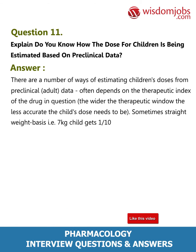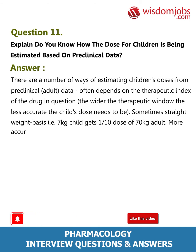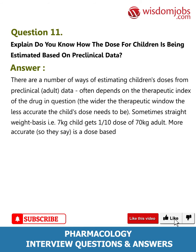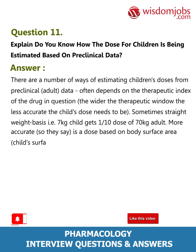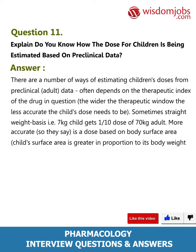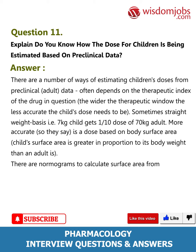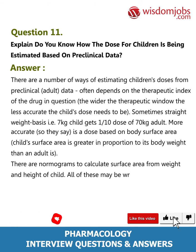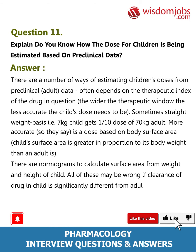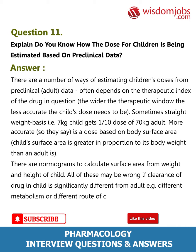Sometimes a straight weight basis is used — for example, a 7 kg child gets one-tenth the dose of a 70 kg adult. More accurate is a dose based on body surface area, since a child's surface area is greater in proportion to its body weight than an adult's. Nomograms can calculate surface area from weight and height. All of these may be wrong if clearance of the drug in a child differs significantly from an adult, due to different metabolism or different routes of clearance.